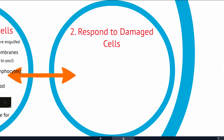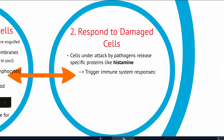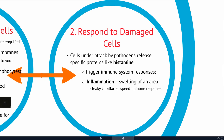The second part of the generalized internal defense is to respond to damaged cells. If a cell is under attack by a pathogen, it's going to release proteins like histamines that alert the immune system that help is needed — similar to calling 911 if your house is being robbed. This triggers a full immune response, including inflammation, which is a swelling of the area caused by capillaries becoming leaky and letting more liquid out of the circulatory system.